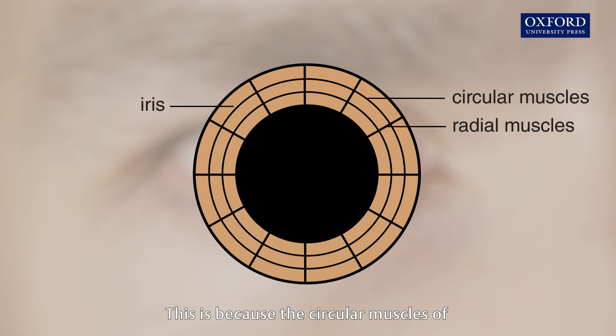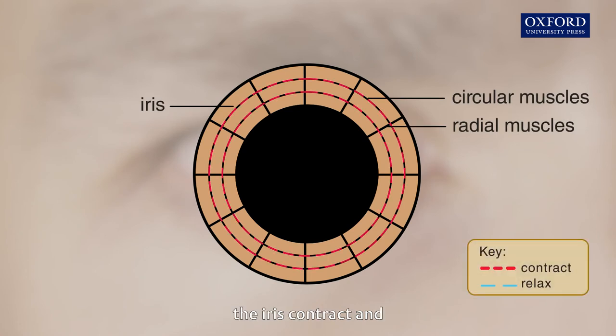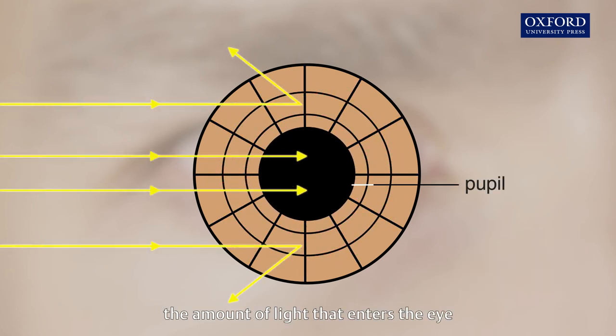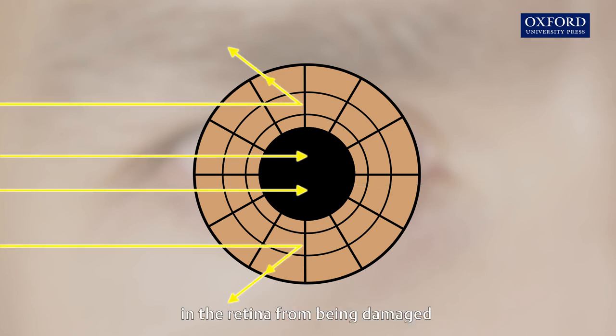This is because the circular muscles of the iris contract and the radial muscles relax. The constriction of the pupil limits the amount of light that enters the eye. This is to prevent the photoreceptors in the retina from being damaged by the bright light.